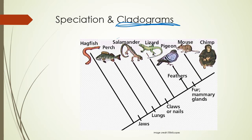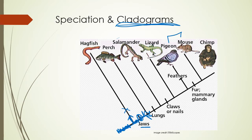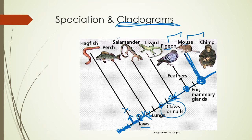We can use cladograms to show speciation over time. This is the longest-ago common ancestor of all organisms on the page, and something happened where speciation occurred — these hagfish went one way, the other organisms went different ways. A trait like jaws is common to everything that comes after this tick mark, so hagfish do not have jaws but everybody else does. Be careful — we might think pigeons and mice are as closely related to each other as mice and chimps since they're next to each other, but in fact mice and chimps are most closely related because their common ancestor is most recent. The common ancestor of pigeons and mice is much further back. Look backwards through time at common ancestors and traits that evolved — this is called a cladogram.